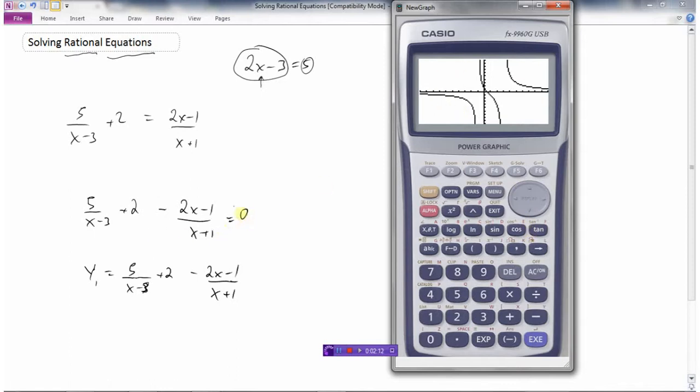Now remember what I'm trying to do is find out where this function equals 0. It looks like from the graph that there's only going to be one place right about here. If I go to solve, the roots are like the x-intercepts of this function, or the place where the y-value equals 0.